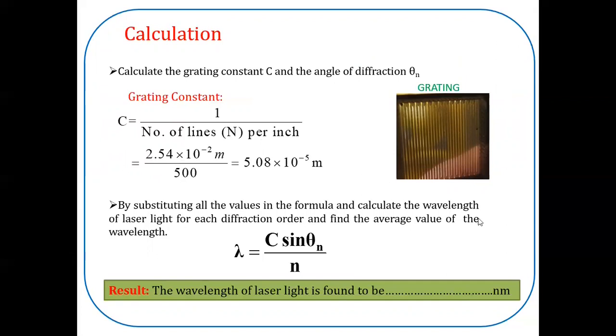By substituting all the values in the formula, calculate the wavelength of laser light for each diffraction order, and find the average value. Tabulate the result.